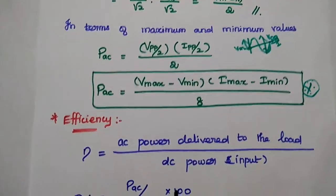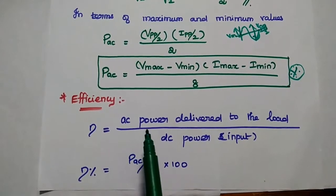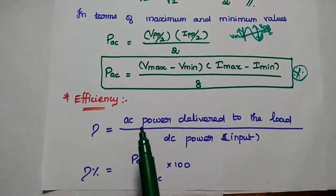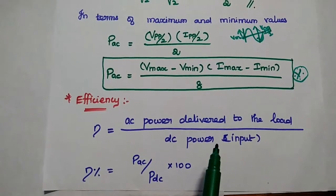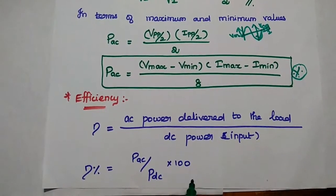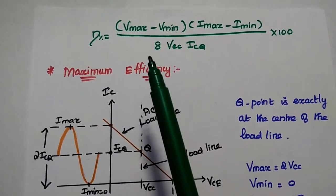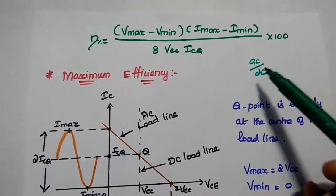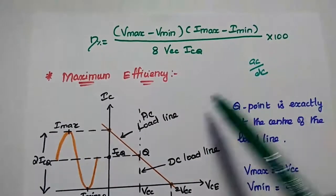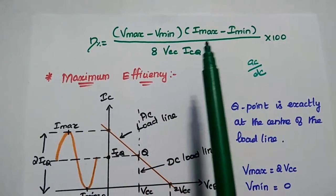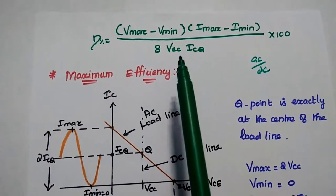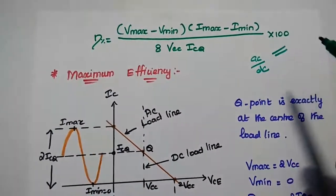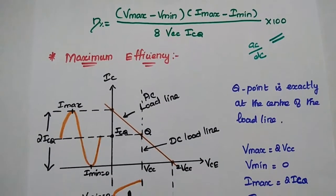Next, we are going to find out the efficiency. It is the amount of AC output power delivered to the load from the DC supply power — the ratio of AC power delivered to the load to the DC supply power, represented in terms of percentage. Substituting the values: AC power is equal to (Vmax − Vmin)(Imax − Imin) divided by 8, and DC power is VCC into ICQ, multiplied by 100. This is the formula for efficiency of the transformer coupled Class A amplifier.